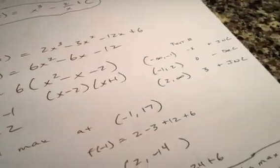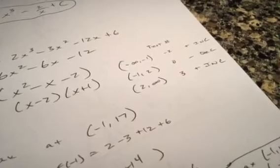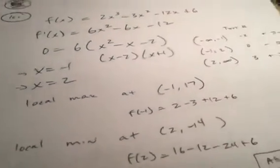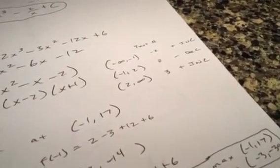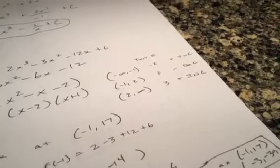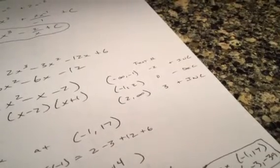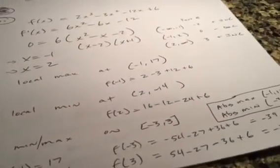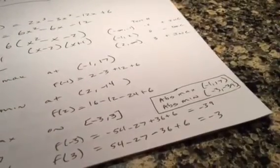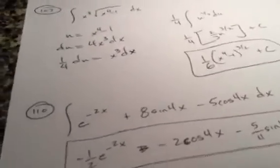With critical values at negative one and two, set up three intervals and choose test numbers — negative two, zero, and three work well. Plug them into the derivative: if the derivative is positive, the function is increasing; if negative, it's decreasing. Going from increasing to decreasing gives a local max; decreasing to increasing gives a local min. Plug those x-values into the original to find the local min and max values. For absolute min and max on the interval negative three to three, use the endpoints plus the critical values that fall within the interval.